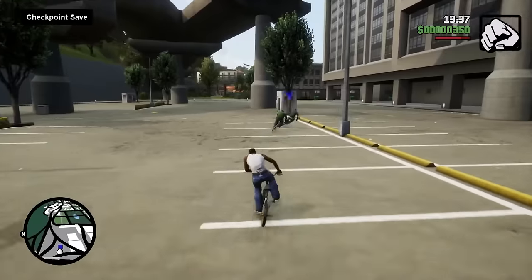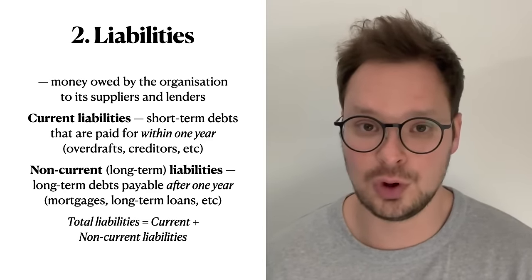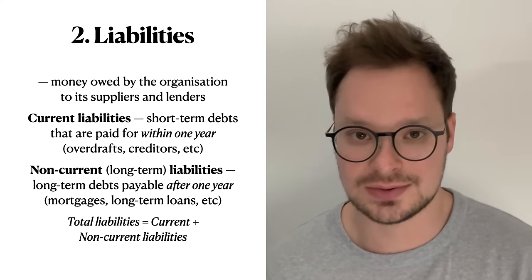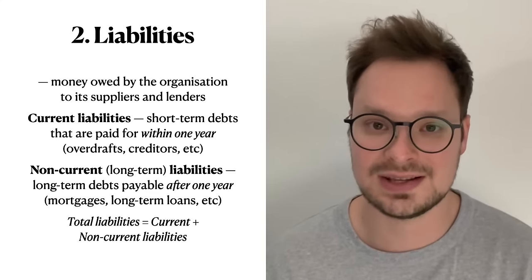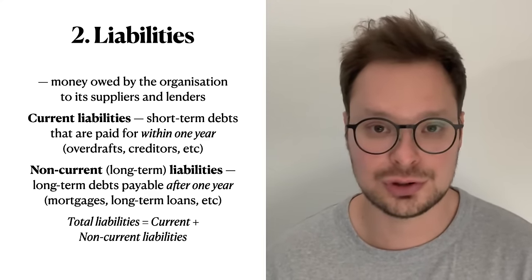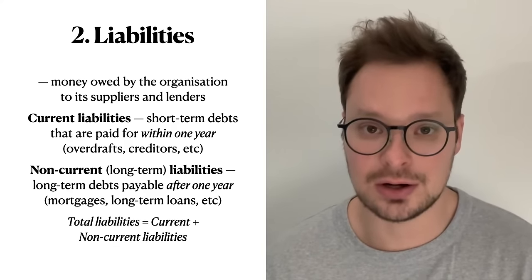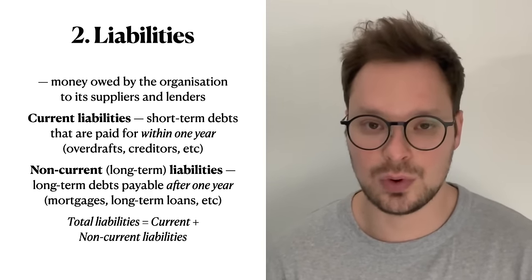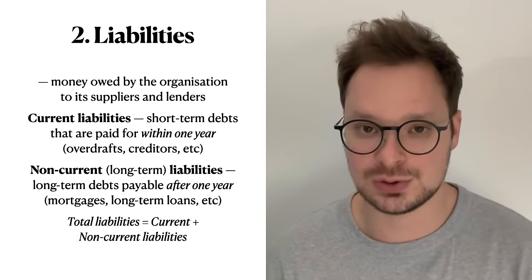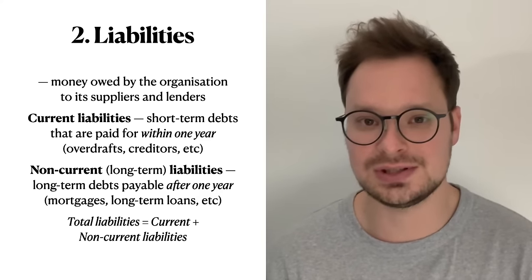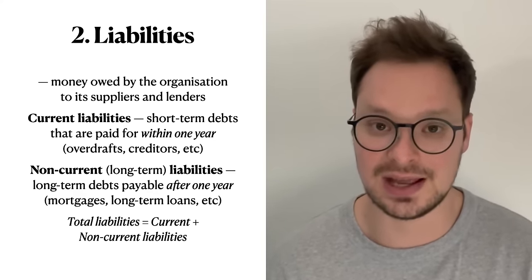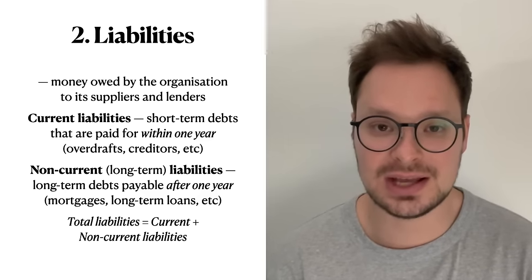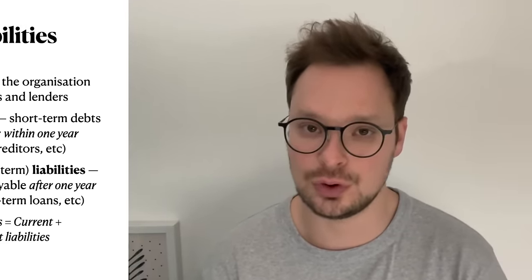The second part of the balance sheet is liabilities — money owed by the business to its lenders and suppliers. Liabilities can also be current or non-current. Current liabilities last for less than a year — for example, short-term loans such as overdrafts, and creditors. Non-current liabilities — or long-term liabilities — are payable after more than one year. You can use the same 12-month rule to distinguish between current and non-current for both assets and liabilities. Total liabilities = current liabilities + non-current liabilities.